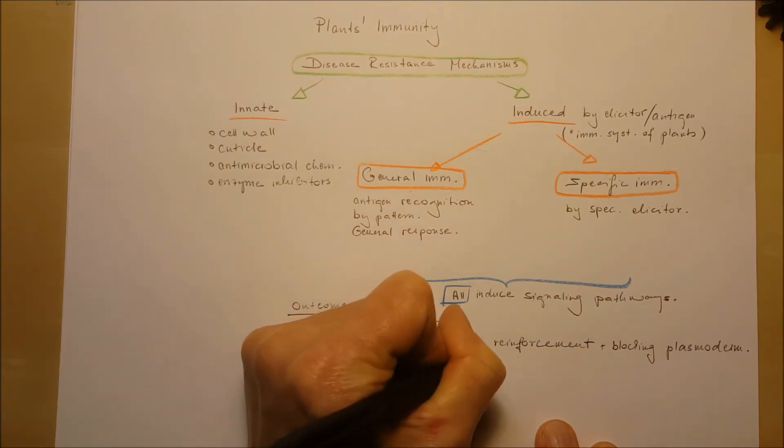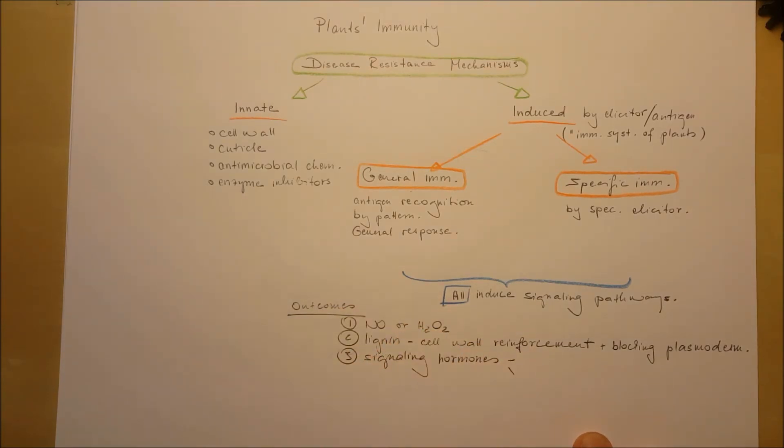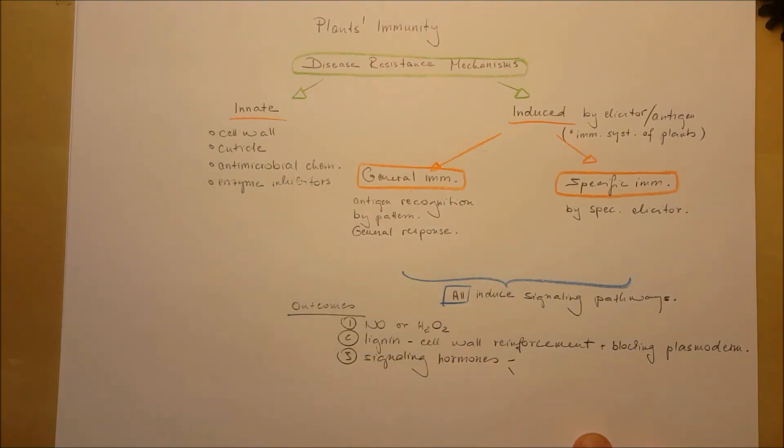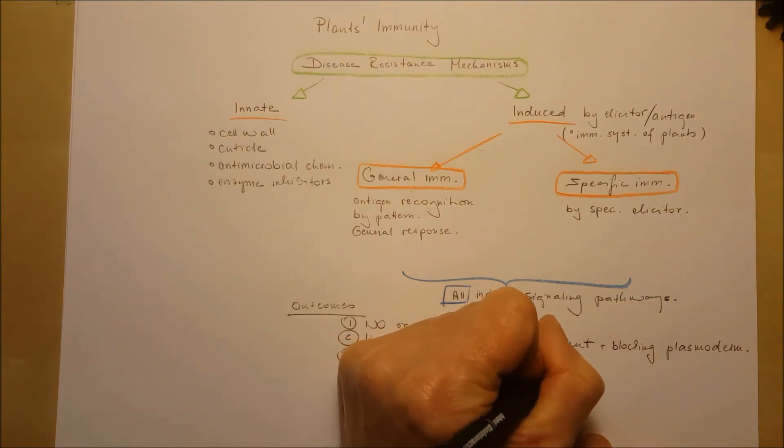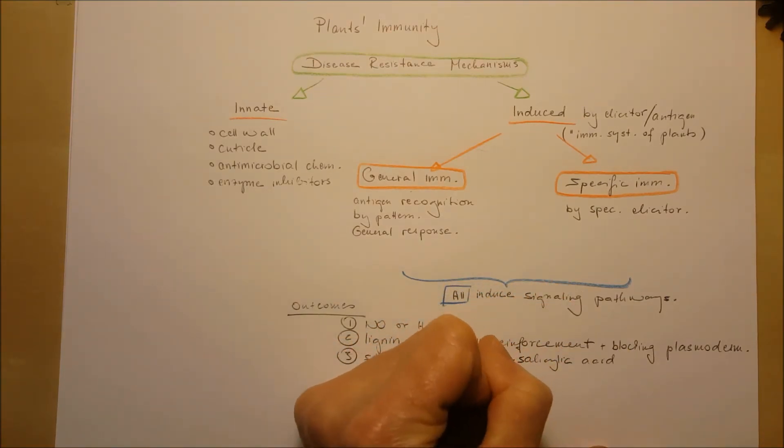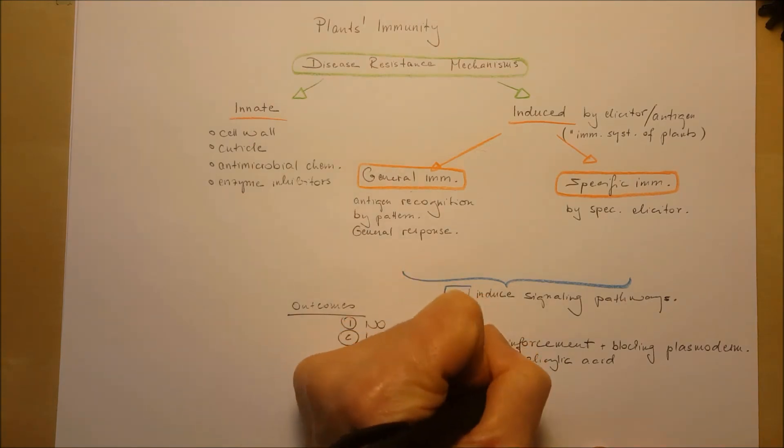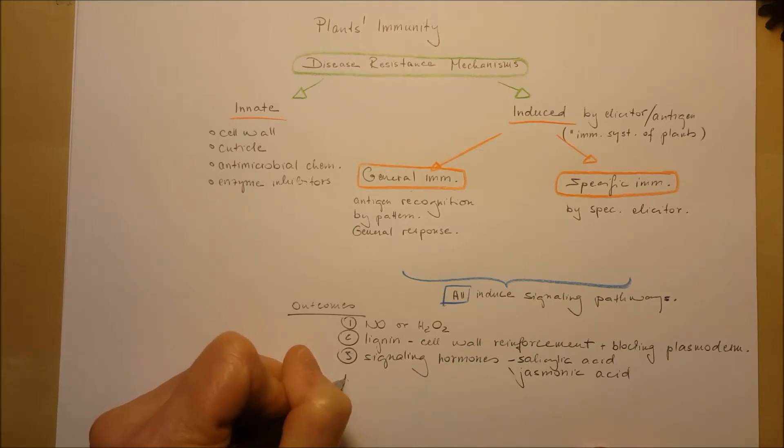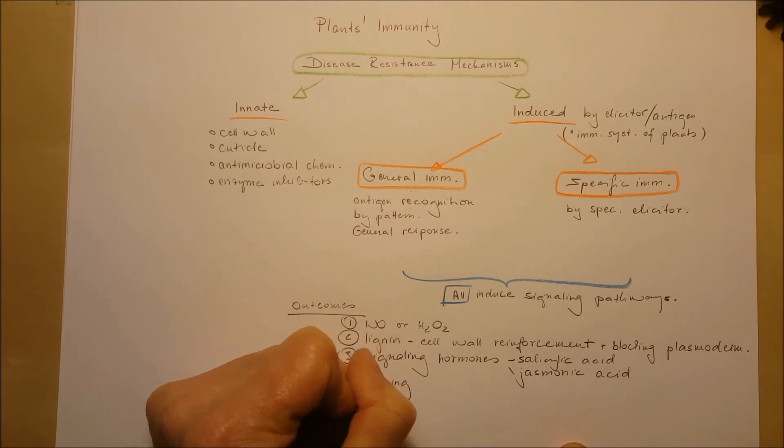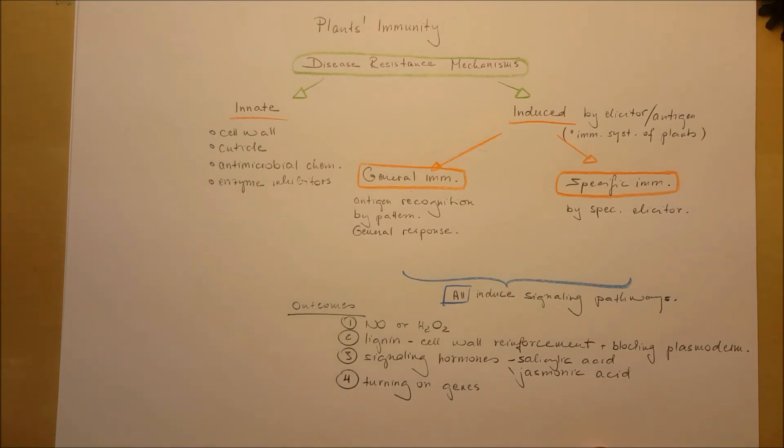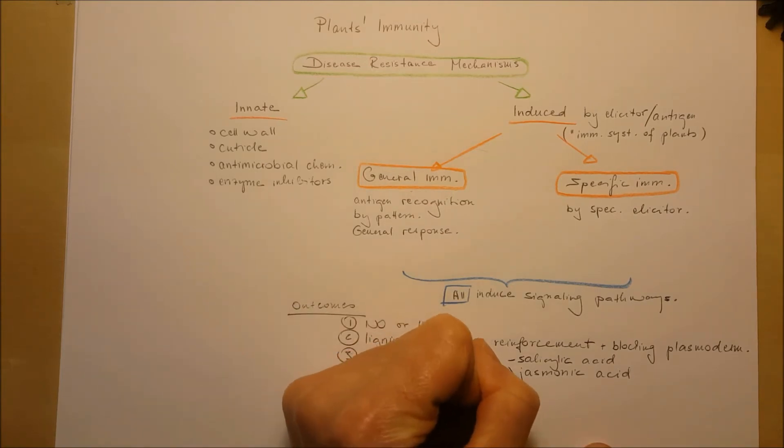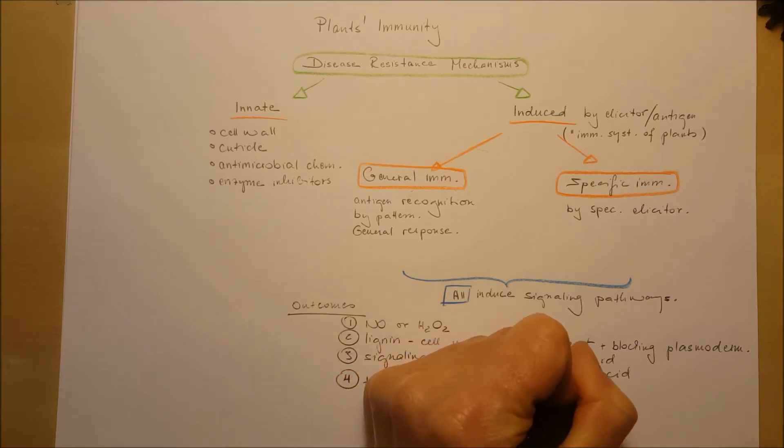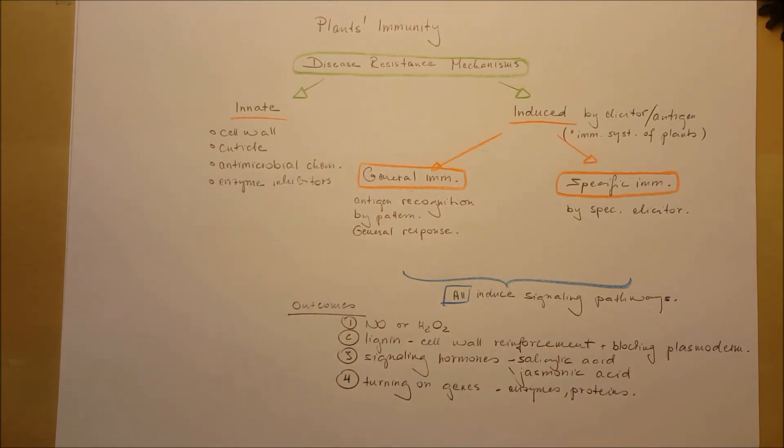The third one is production of signaling hormones such as salicylic acid or jasmonic acid that signal to the neighboring cells that danger is coming or might come, and those cells are already damaged. The fourth one is turning on genes to produce antimicrobial enzymes or proteins to block the reproduction of the elicitors.